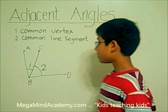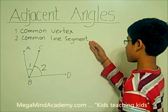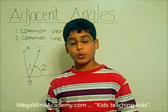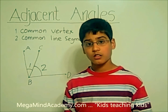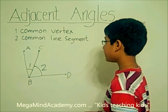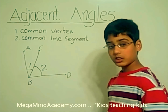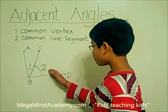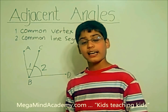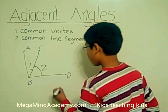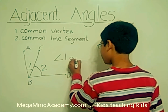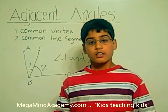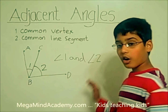Now, let's look at the second property. The second property of an adjacent angle is that it has a common line segment. Does angle 1 and angle 2 have a common line segment? Yes, they do. The common line segment is line segment CB. So, line segment CB is a common line segment between angle 1 and angle 2. So, yes, angle 1 and angle 2 are adjacent angles.